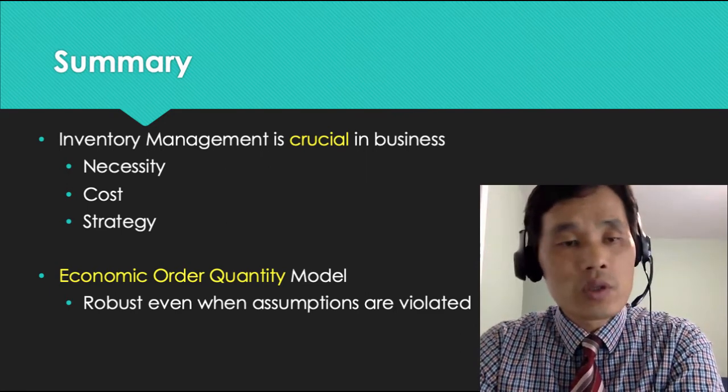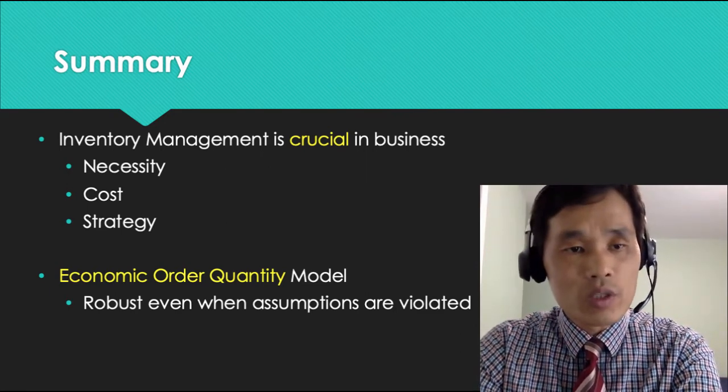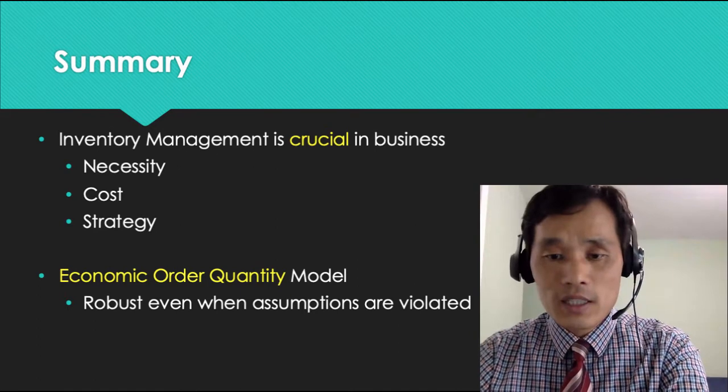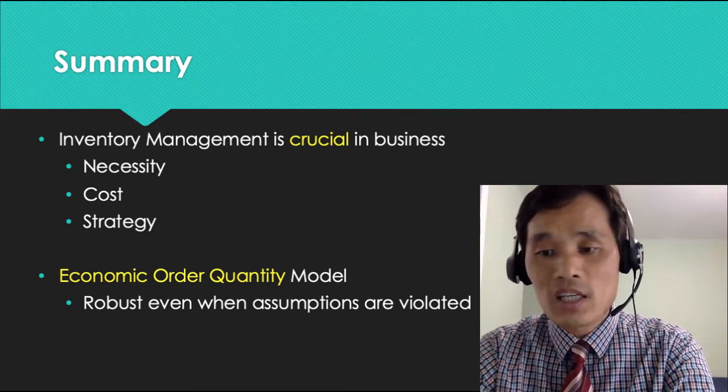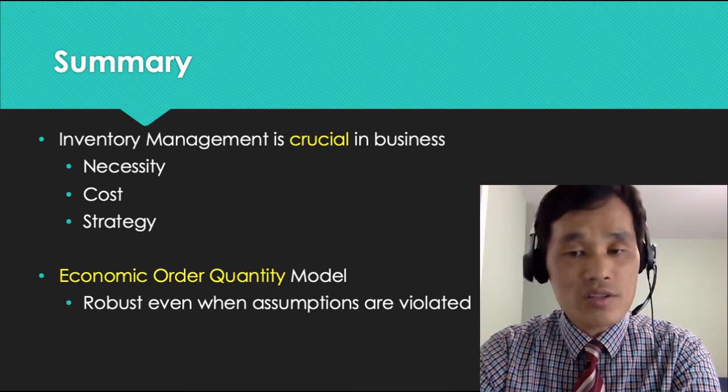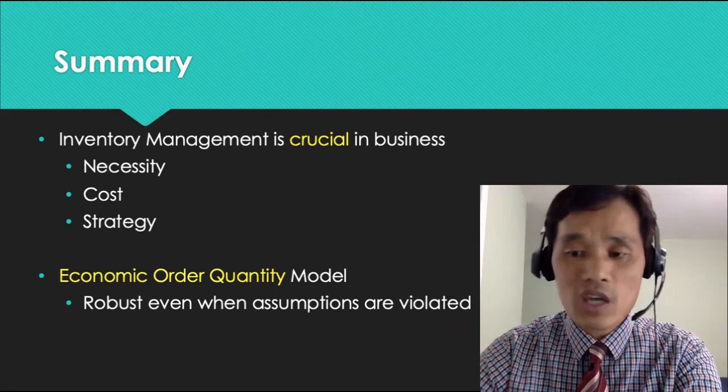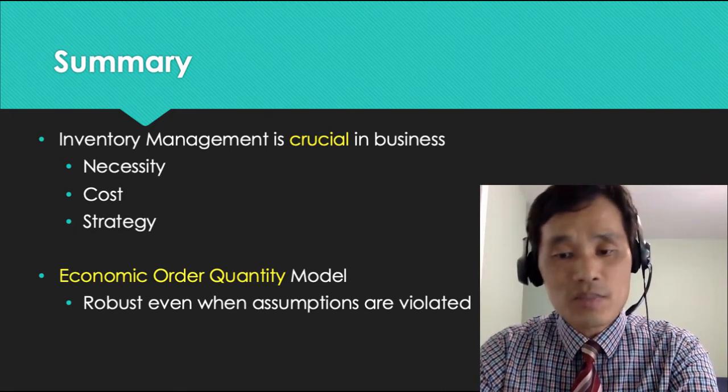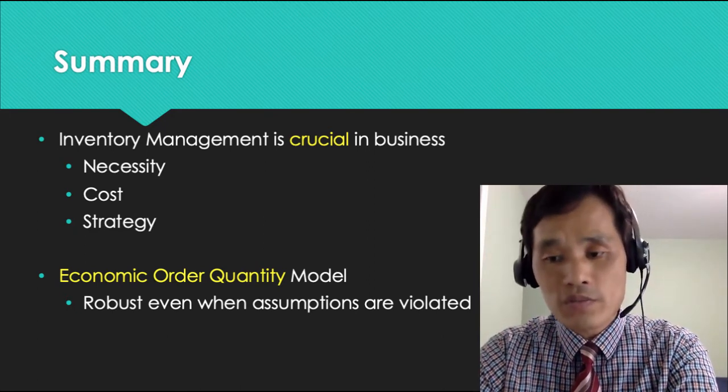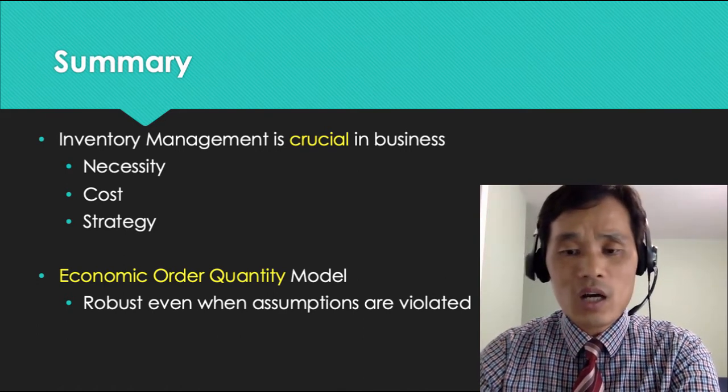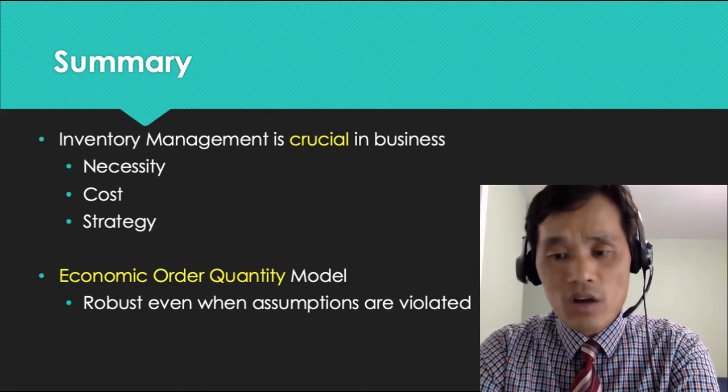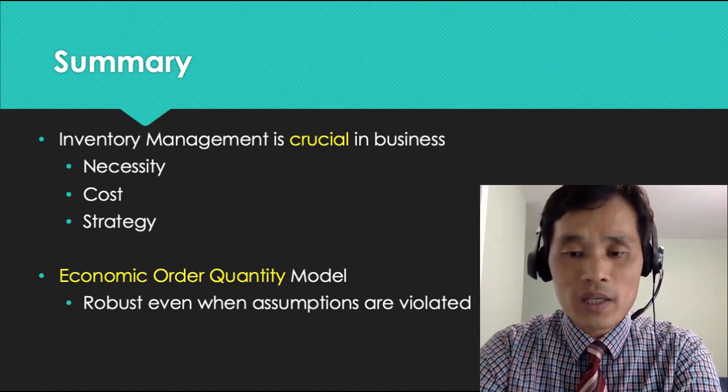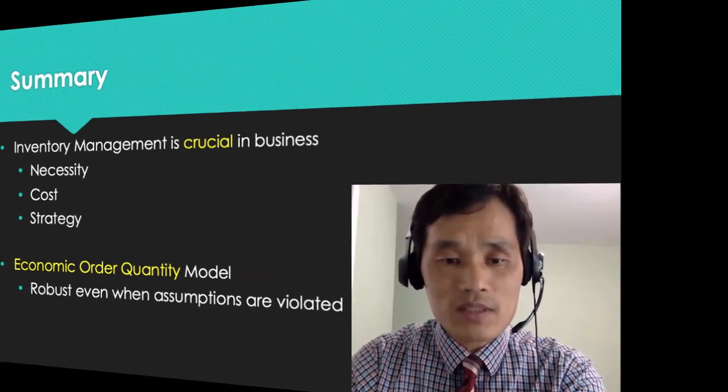In summary, we have learned three important topics in this lecture. First one was inventory management is crucial in business, and second one was economic order quantity model. Inventory management plays an important role because it takes up as much as 50% of the capital cost. Even though it is costly, one has to carry it because it is necessary for running a business and can even serve as a strategic purpose, such as mitigating the fluctuations of price, preparation for demand surge, and discounts. We also learned how to derive EOQ, setup costs, holding costs, total costs, frequency of orders, and reorder points. I hope that this lecture is helpful for expanding your understanding on inventory management. Thank you.